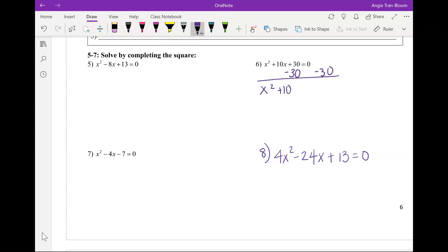X squared plus 10X. What's happening to these two 30s now? They cancel, right? So, remember, we added a blank space. This is equal to negative 30. Perfect. That's the first step.